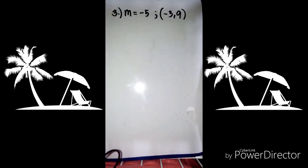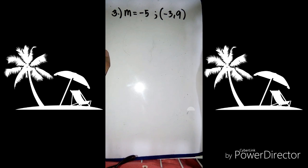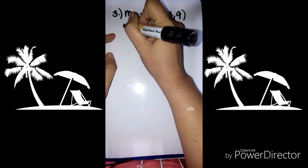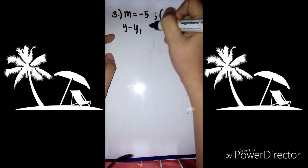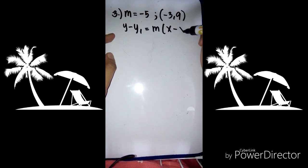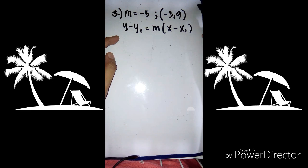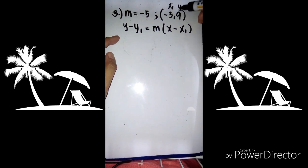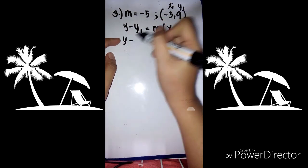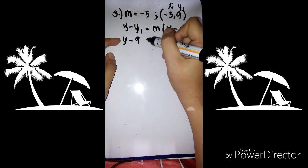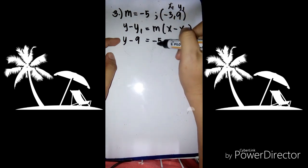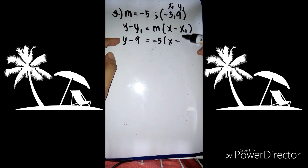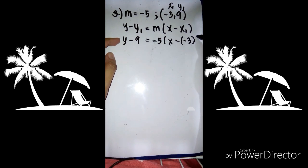The third example: m equals negative 5 and the given point is (negative 3, positive 9). The point-slope formula is y minus y sub 1 equals m times x minus x sub 1. All we have to do is substitute the given slope and the point. This is x sub 1 and y sub 1. So we have y minus 9 equals negative 5 times x minus (negative 3), using parentheses.